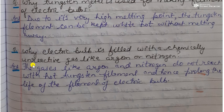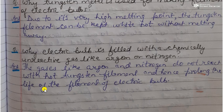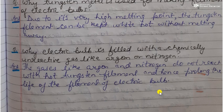The next question is: why is an electric bulb filled with a chemically unreactive gas like argon or nitrogen? These gases are unreactive or inert gases, so they will not react with the hot tungsten filament, and thus the life of the tungsten filament will be prolonged. To prevent the tungsten filament from reacting at high temperature, the electric bulb is filled with unreactive gases like argon and nitrogen. This was all about the chapter electricity — I hope you have all understood it well. Thank you for watching, see you in the next class.